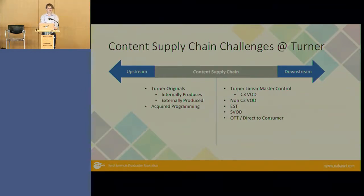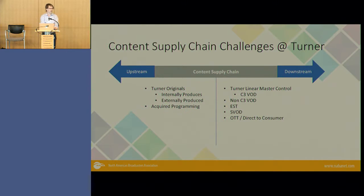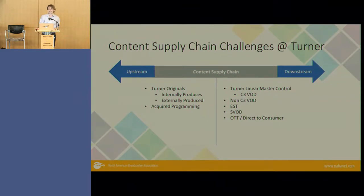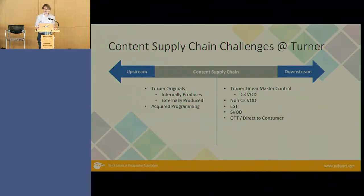That includes Turner's linear master control — all of our linear air playout. We source our C3 VOD off the tail of that linear stream, we do live-to-VOD processing, then there's our non-C3 VOD, electronic sell-throughs, subscription video on demand, and our direct-to-consumer OTT-based products. Even within that list there's a huge amount of variability. It would be awesome if we could act like Netflix with one product and optimize the supply chain for it, but we have lots of different networks, platforms, and products, which drives a huge amount of complexity into the downstream side.